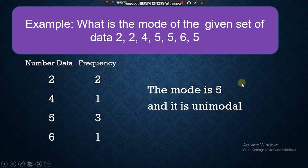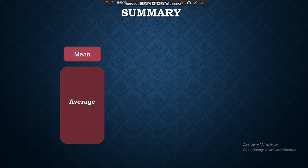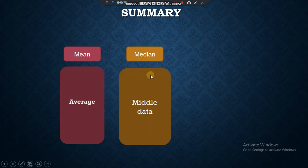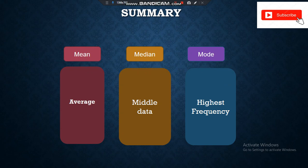So that is the mean, median, and mode. Let's have the summary. Mean — average: add all values and divide by how many there are. Median — middle data: arrange the values and locate the middle. Mode — highest frequency: the most frequently occurring value.